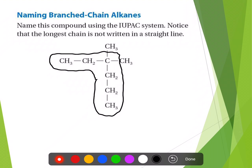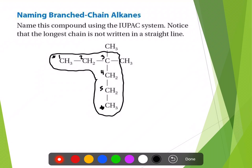There are two options for numbering the carbons — you can start down here at this carbon or up here. Rule number two says that you number them starting at the end that will give the groups attached the lowest numbers possible. You want to number the chain so that you get to something the fastest possible way. If I start at the bottom, carbon number one is at the bottom and this carbon right here would be carbon number four. If, however, I start up here, that's only carbon three — that's where everything is attached. So that gets us to something faster, at carbon three instead of carbon four. So we're going to number that way.